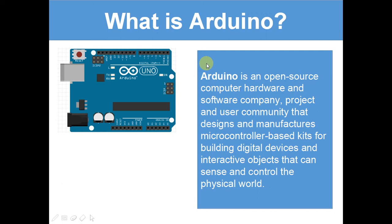Let's have a look at what this means. Open source means there's no restrictions to it — you can do anything you want to it and Arduino has not put any restrictions into what you can do. The computer hardware refers to the actual boards. The software company means the Arduino IDE that you put your code in on the computer. And the user community is the website where people can share ideas and help each other out.